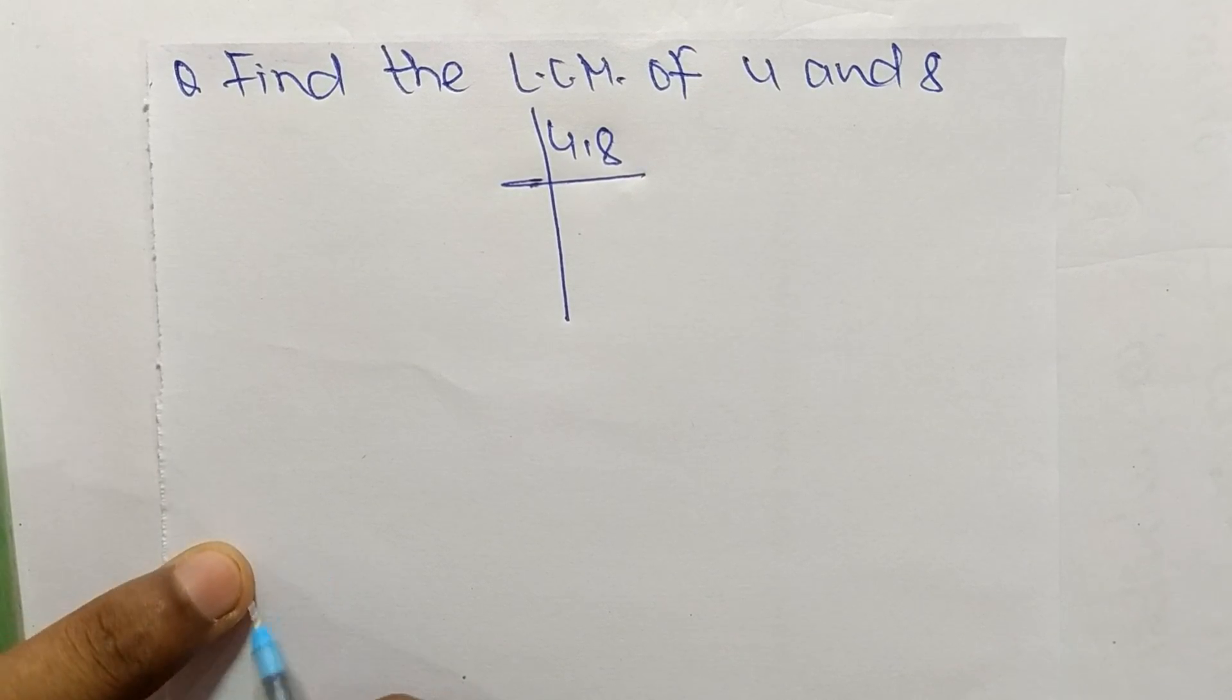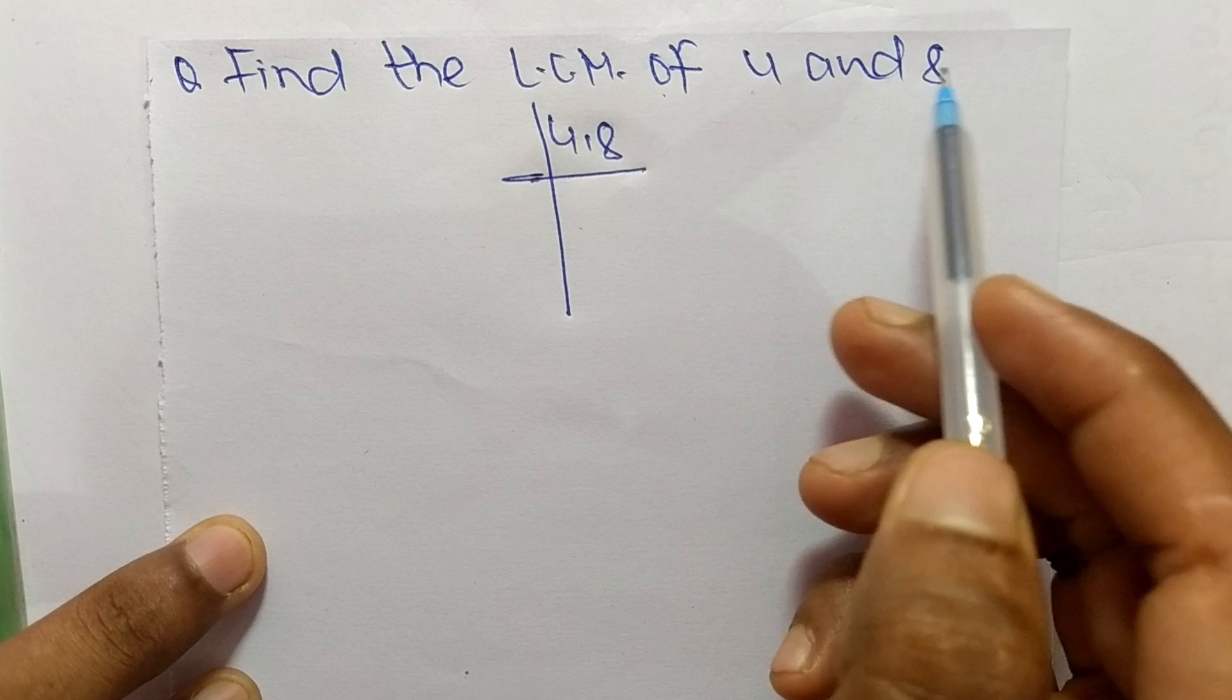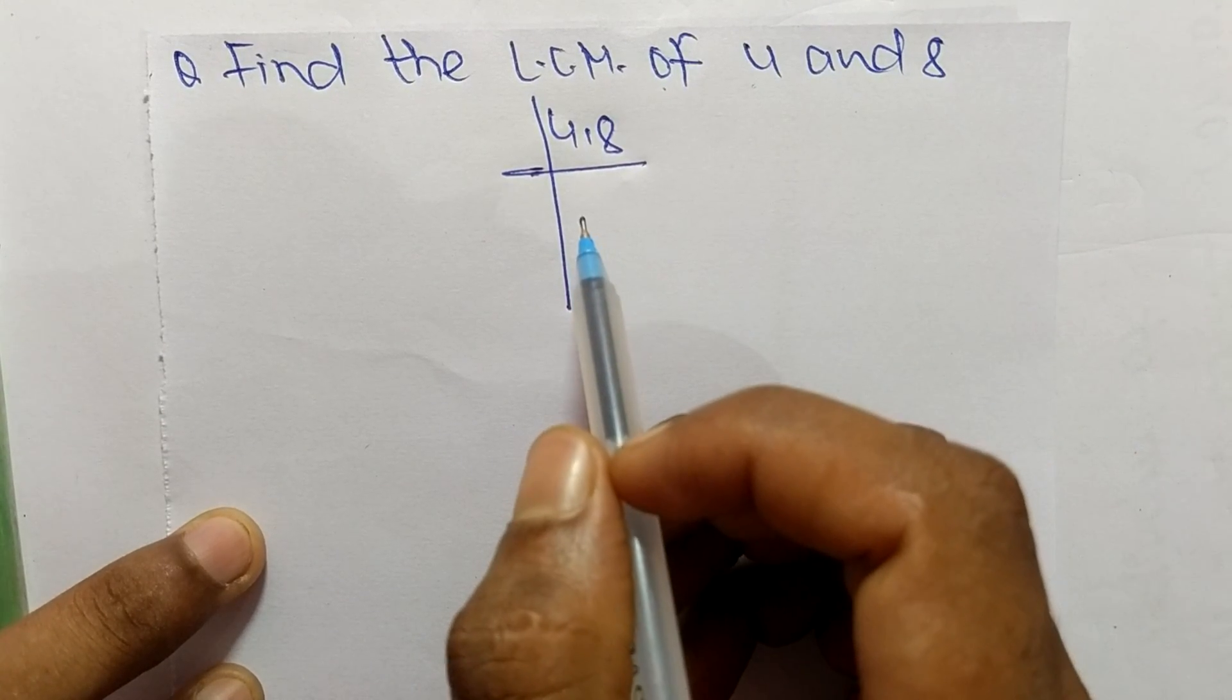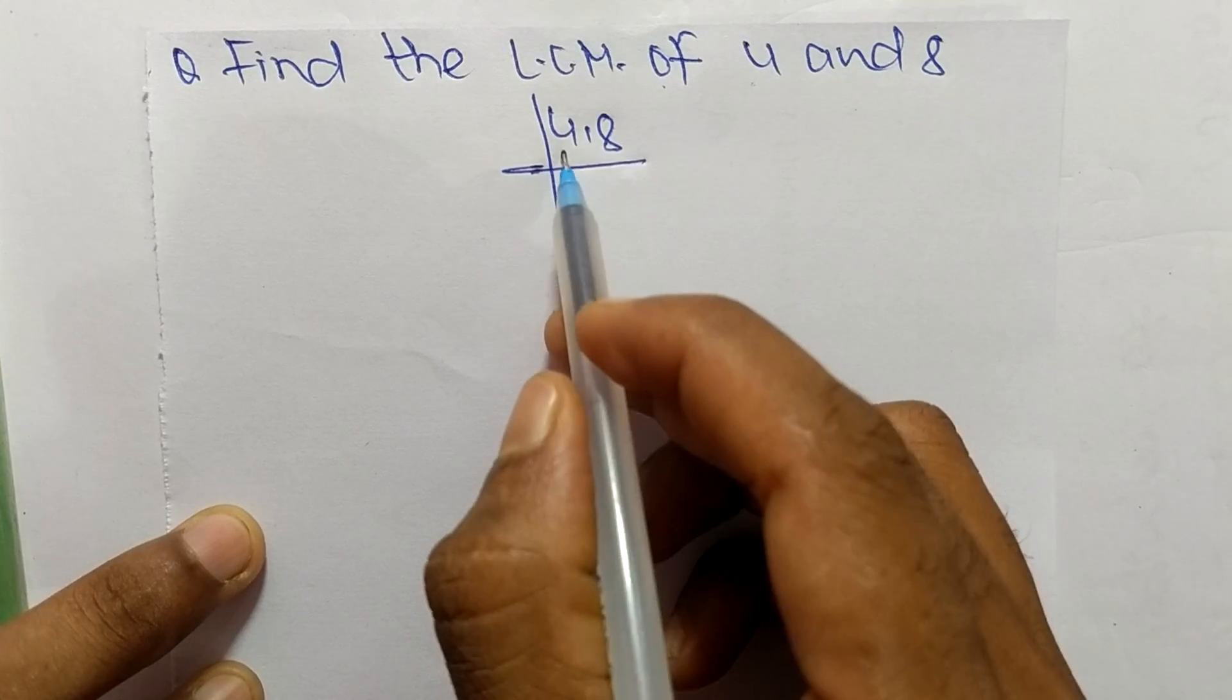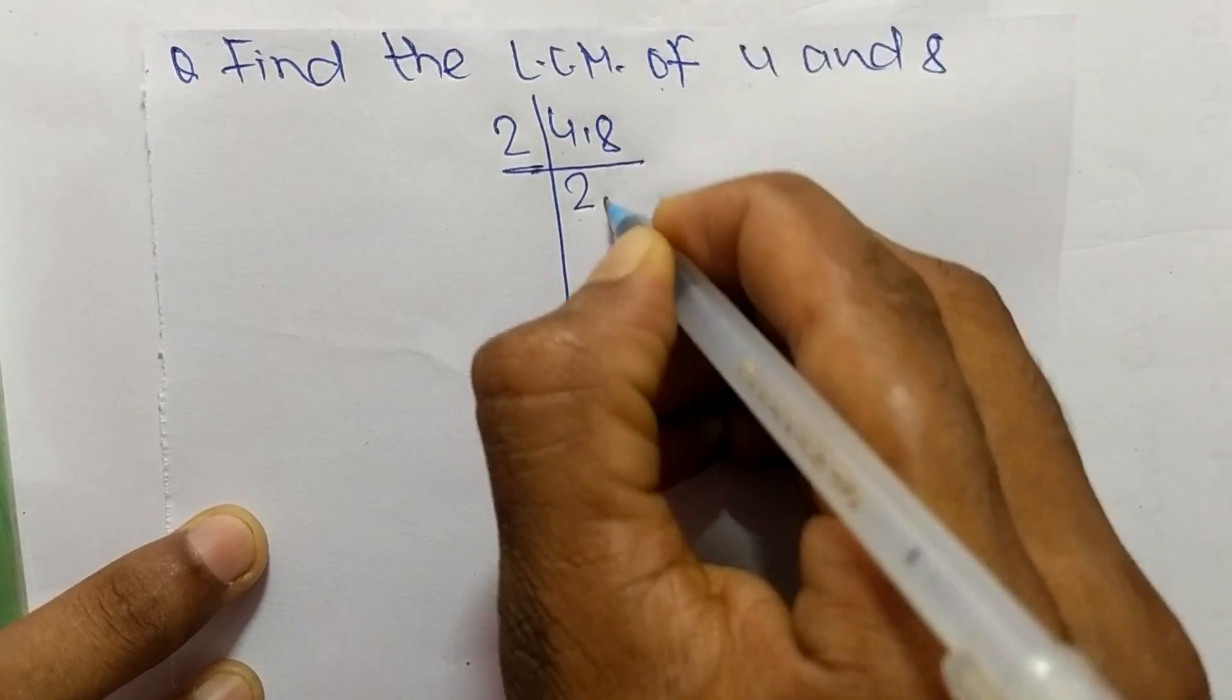Today in this video we shall learn to find the LCM of 4 and 8. For that, we choose the lowest number which can exactly divide both numbers, so it is 2. 2 times 2 means